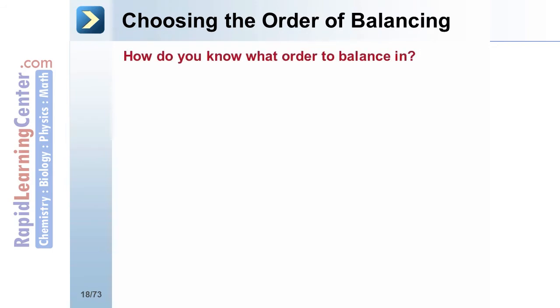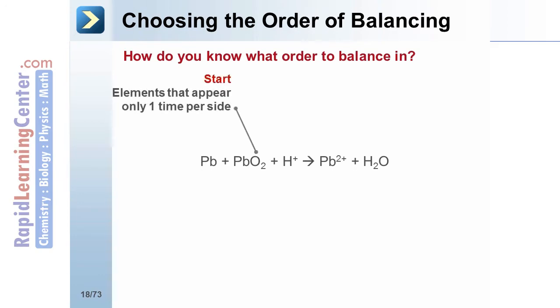Often, one of the most frustrating tasks for students as they attempt to balance equations is to know what order to balance the atoms in. Here are some tips to help. Start with the elements that only appear one time on each side of the reaction.